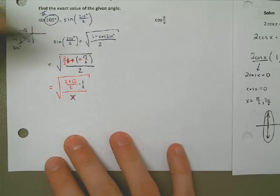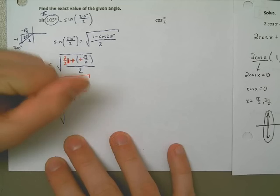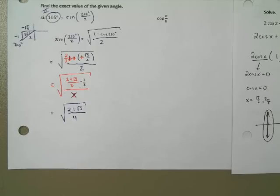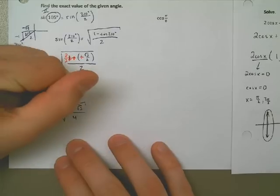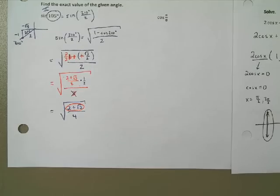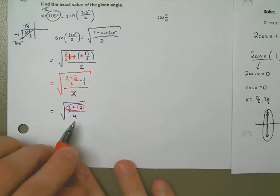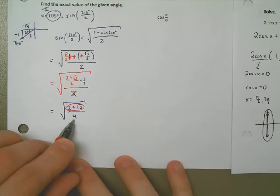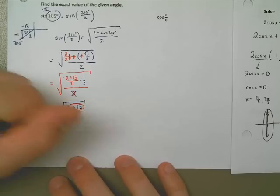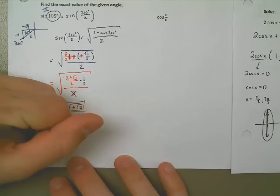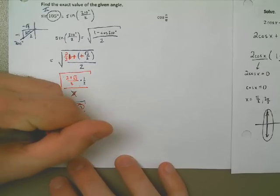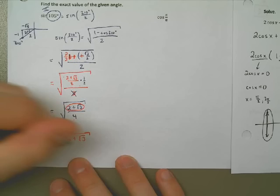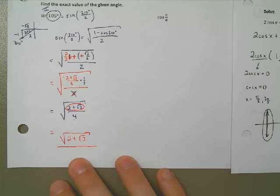Here's the issue: the plus sign means the numerator is one chunk inside the square root, so I can't simplify it further. But on the bottom, the square root of 4 is just 2, and since it's being divided — not added or subtracted — I can write it outside the square root. So the final answer is the square root of 2 plus the square root of 3, all over 2. That's the exact value of sine of 105 degrees.